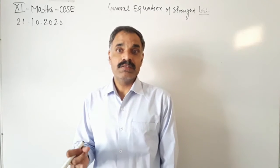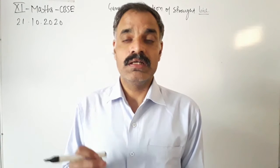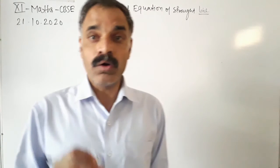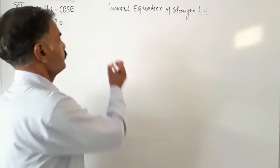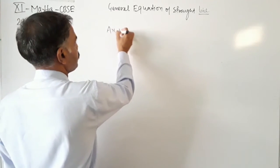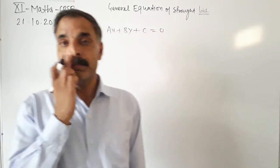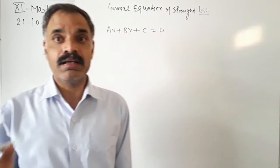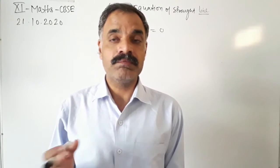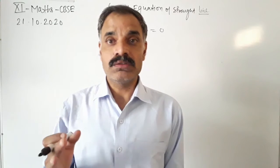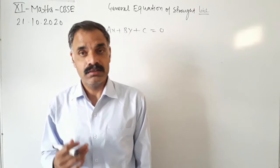Now what does the general equation of the line mean? The general equation of the line of first degree in two variables is given as AX plus BY plus C equals to 0. It will contain variable X, variable Y, coefficient of variable X, coefficient of variable Y, and constant C. So this is the general equation of the line.